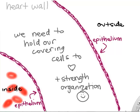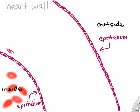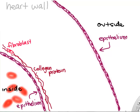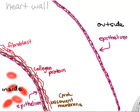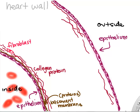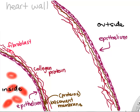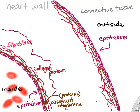Connective tissue gives strength and holds the various cells to the other layers of tissue. Here we draw a fibroblast, our favorite connective tissue cell. It builds fibers — protein fibrous networks. One of the more prevalent protein fibers is collagen; another is elastin. The epithelial cells and connective tissue cells also build the basement membrane — a protein network that holds specifically epithelial tissue to connective tissue. All those proteins add strength to the epithelium and connect it to the other tissue layers in the heart.